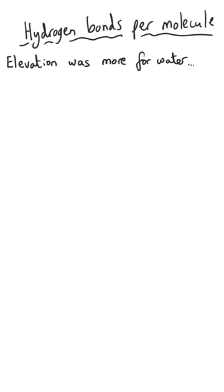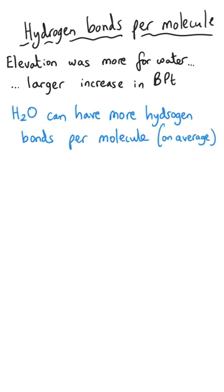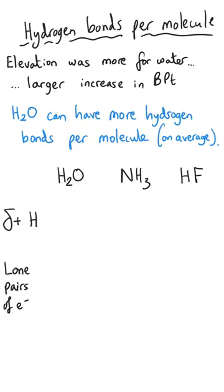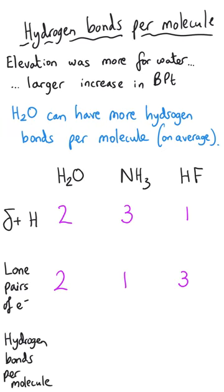You might have noticed that the elevation in water's boiling point is greater than it is for ammonia and hydrogen fluoride. That's because water can, on average, have more hydrogen bonds per molecule than the other two. Water has two lone pairs on its oxygen atom and two electron-deficient hydrogen atoms, giving a balance between the two qualities. Ammonia has three electron-deficient hydrogens but only one lone pair, and hydrogen fluoride has three lone pairs but only one electron-deficient hydrogen. So on average they can only form one hydrogen bond per molecule, whereas water can form two.